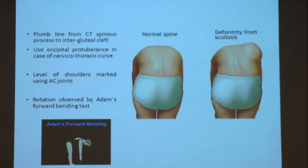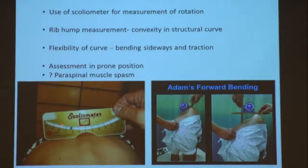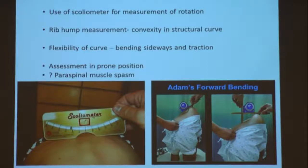Always comment on Adam's forward bending test — this is the core standard. Why? Because the rib hump becomes more obvious when you bend forward. When you look from behind at around 90 degrees of forward bending, you can clearly see inequality of the two halves of the chest. Also assess the flexibility of the curve by lateral bending. You can use a scoliometer in the bending forward position to measure the rib hump angle.